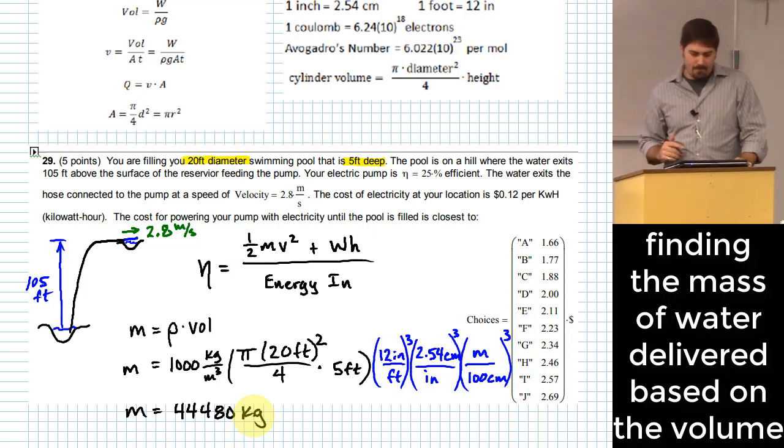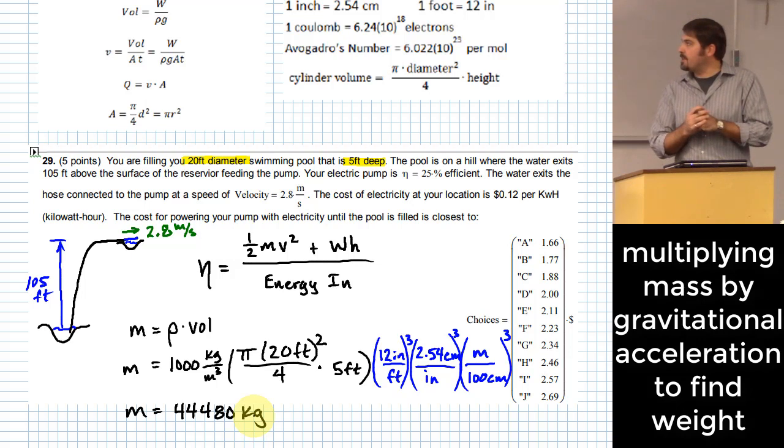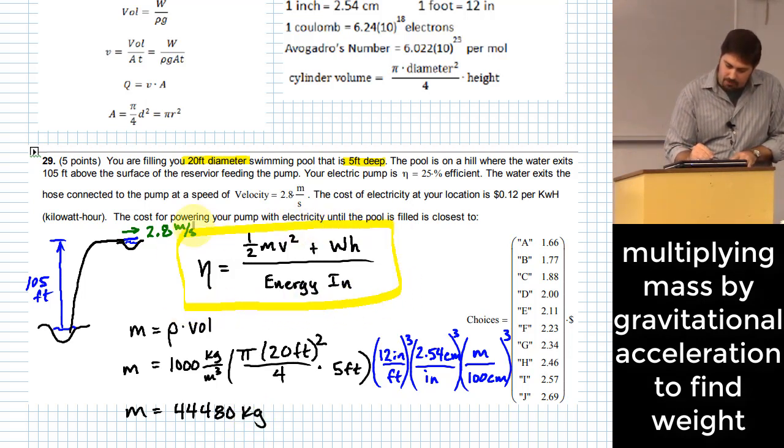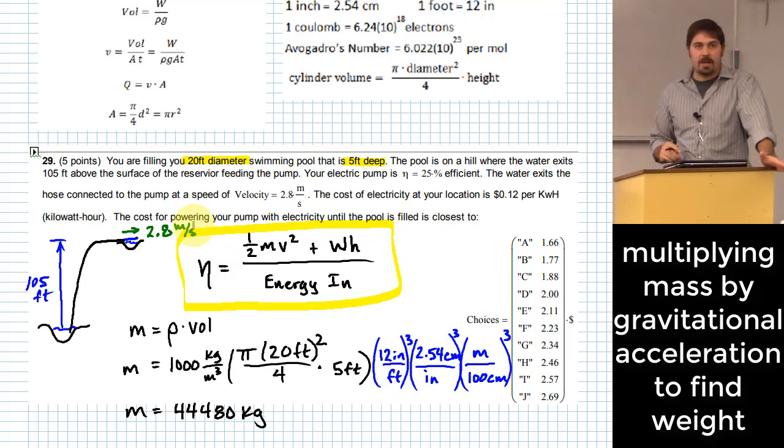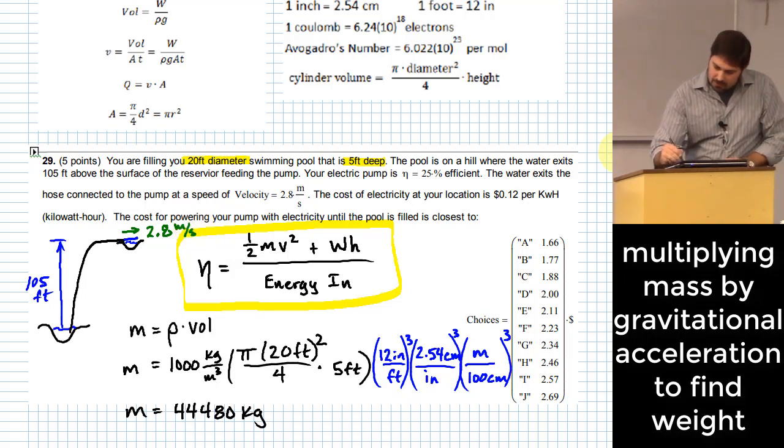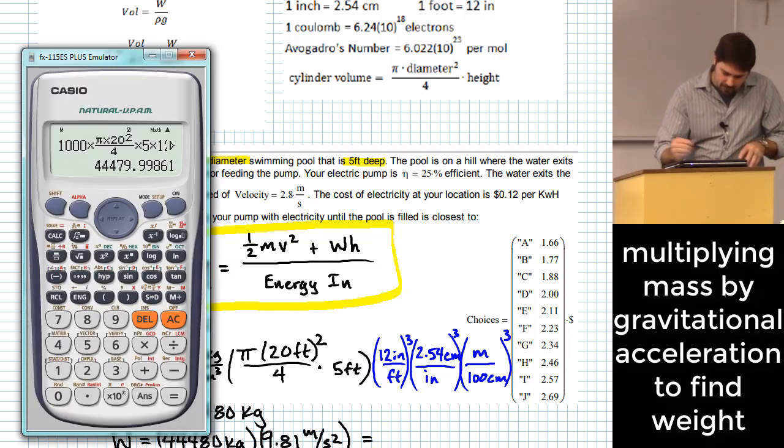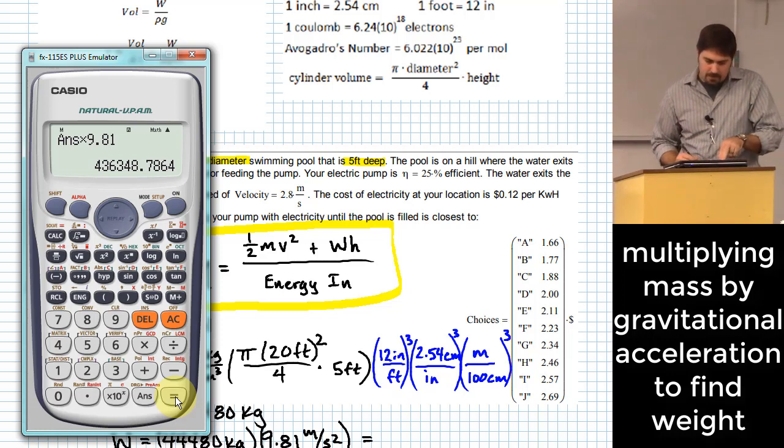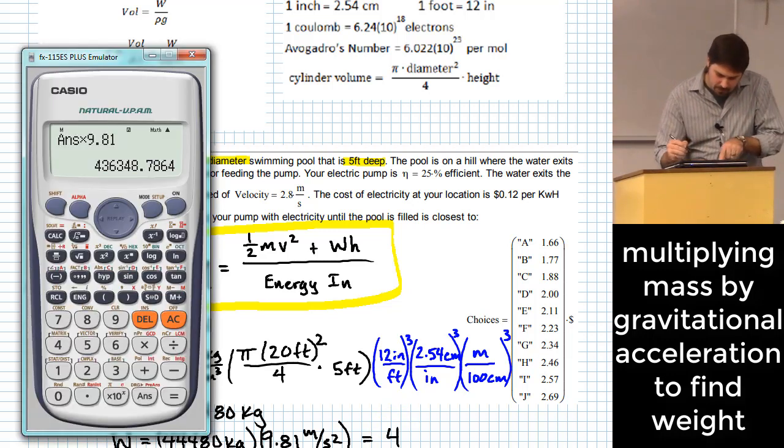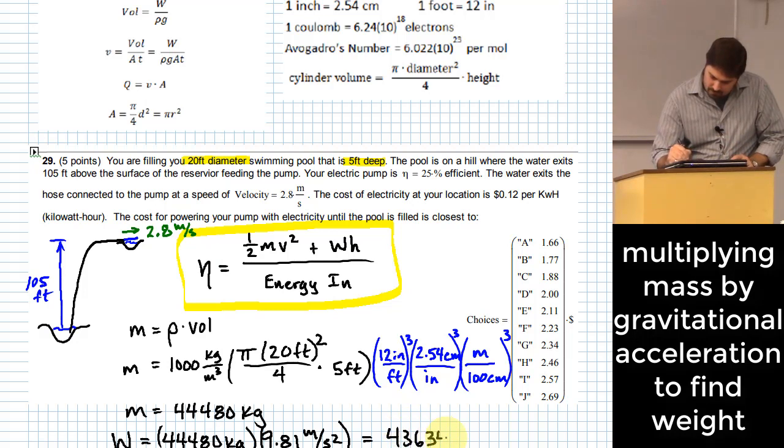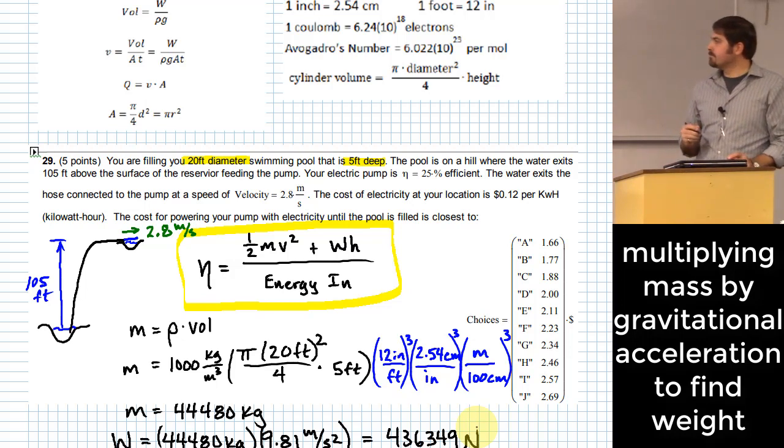All right. So how does that help me? Am I still missing anything in my major equation that I'm trying to use up here? This kind of central equation that I'm going to try to use. Okay. Weight. But how do I get weight? I multiply by gravity. Right. So in order to find weight, I take this 44,480 kilograms and multiply it by 9.81 meter per second squared in order to get a value that's in newtons. So that is 436,349 newtons.